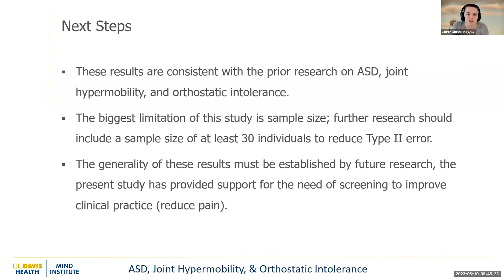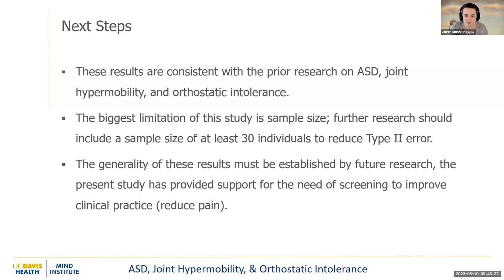These results are consistent with prior research on autism, joint hypermobility, and orthostatic intolerance. The biggest limitation of the study was sample size. Further research should include a sample size of at least 30 individuals to reduce type 2 error. The generalizability of these results must be established by future research. The present study has provided support for the need for screening to improve clinical practice.